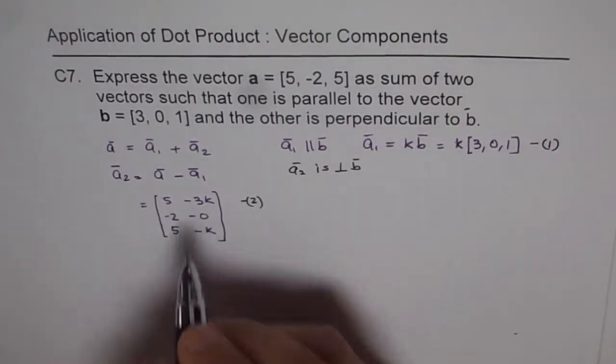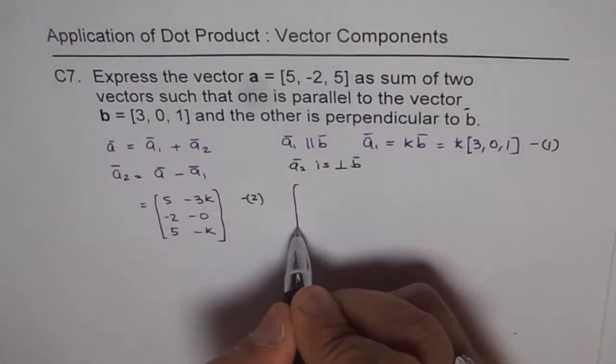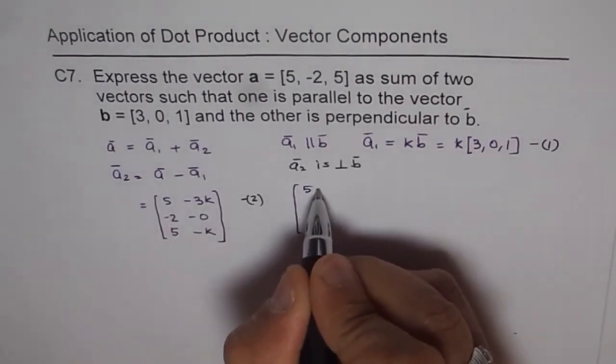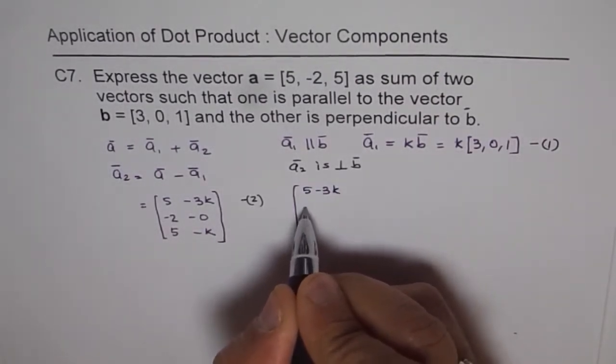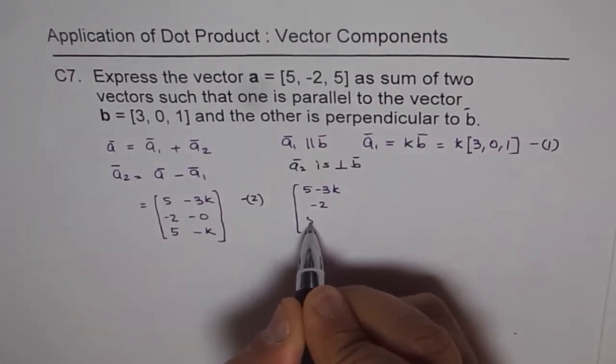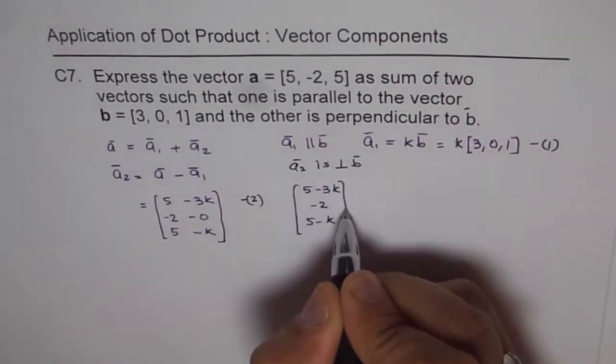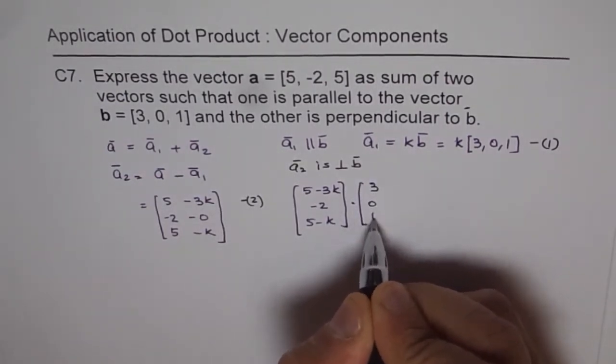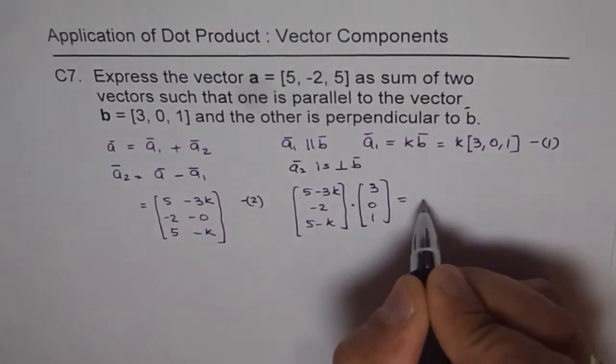a₂ is [5 - 3k, -2, 5 - k], that means dot product between a₂ and b is 0. So we get [5 - 3k, -2, 5 - k] dot [3, 0, 1] equals 0.